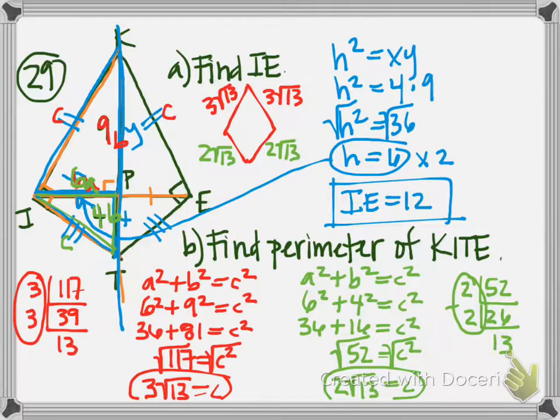To find the perimeter, we add the four sides. Since they all have √13, they're like terms — we add the coefficients: 3 + 3 + 2 + 2 = 10. The perimeter is 10√13.